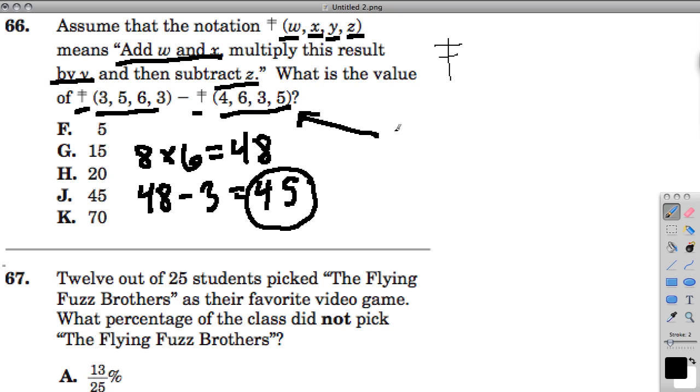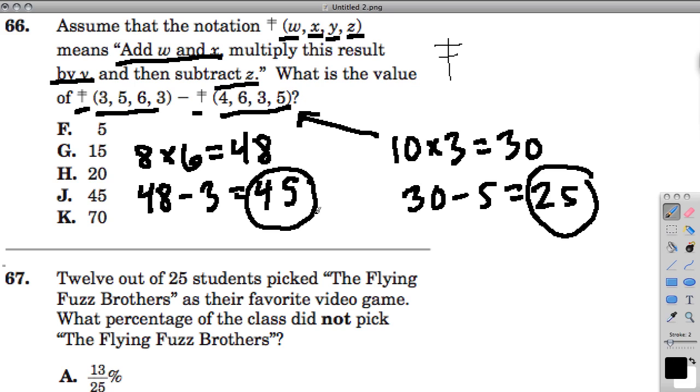Now over here, we do the same thing. w and x are 4 and 6, so we add them and get 10. We multiply it by 3, which is y, and get 30. Then we take 30 and subtract 5 to get 25. Now we're going to take 45 and subtract 25 from it to get our answer H of 20.